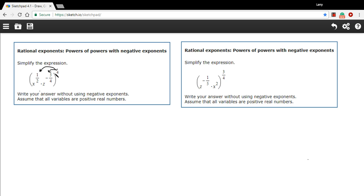1 half times 4 is 2, so this first part right here is just x squared. And negative 5 fourths times 4, the 4s cancel there, so you get z to the negative 5th power.